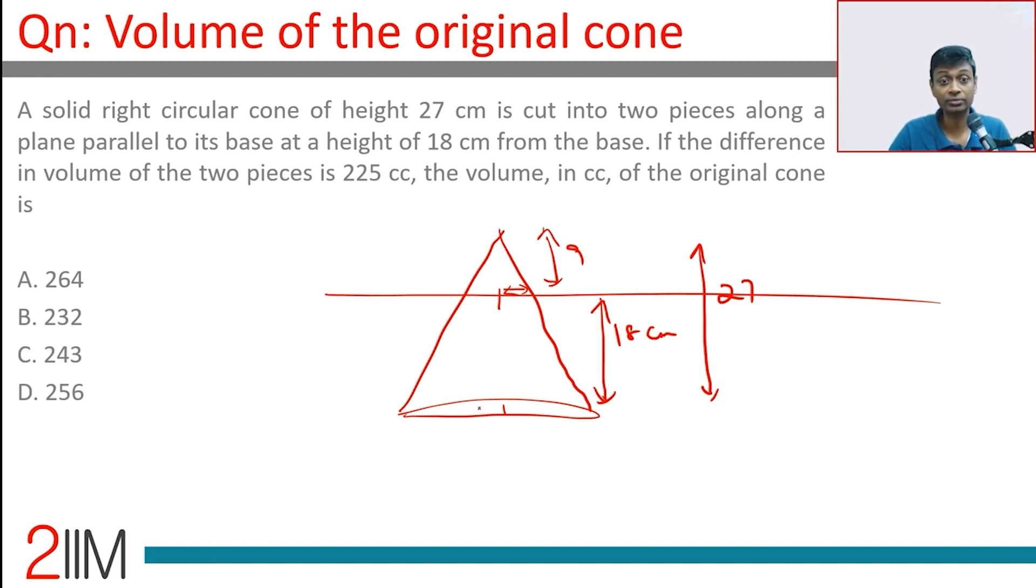So if this tiny cone's volume is v, the large cone's volume would be 27v. The first term's value, the frustum, will therefore be 26v. The difference in volume of the two pieces is 225, so 26v minus v equals 225 cubic centimeters.